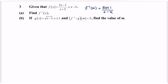Now refer to part b. The function g(x) equals square root of (x minus 1), where the domain is x greater than or equal to 1. We are given that f inverse composed with g, for the value m, equals 3. Find the value of m.